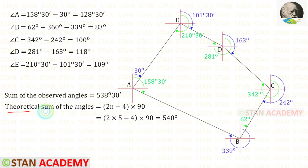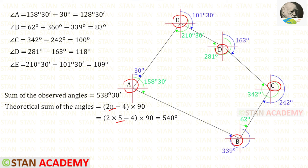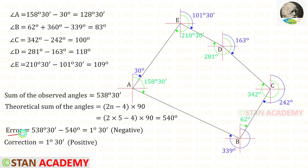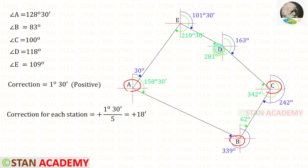Now let us find the theoretical sum of the interior angles. The formula is (2n − 4) × 90°, where n is the number of stations. Here we have 5 stations, so (2×5 − 4) × 90° = 6 × 90° = 540°. The observed sum is 538°30', so the error is 538°30' − 540° = −1°30'. Since the error is negative, the correction is positive. Dividing by 5 stations gives a correction of +18' per station.